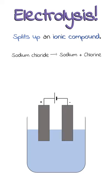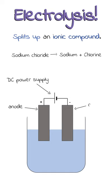To do this we'll need this equipment. Firstly, a DC power supply which we connect to electrodes. The positive electrode is the anode and the negative electrode is called the cathode. We then submerge these in the liquid we want to split up, which we call the electrolyte.